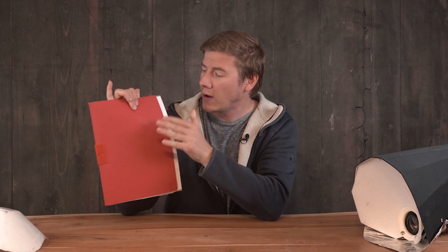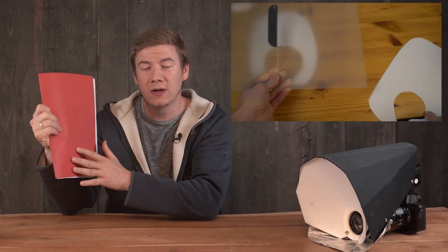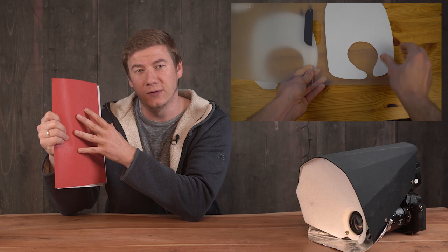The only thing you need for this flash diffuser setup is one or two folders made of plastic or any thicker sheet of plastic. If you don't have a white one, that's no problem. You can just glue some white paper to it and then use this for your diffuser.